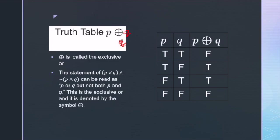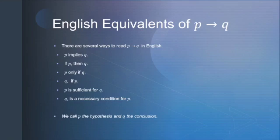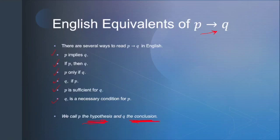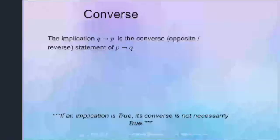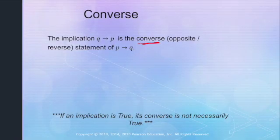Let's look at some equivalents of P implies Q in English — we'll come back to this and make more truth tables. There are several ways to read P → Q: 'P implies Q,' 'if P then Q,' 'P only if Q,' 'Q if P,' 'P is sufficient for Q,' and 'Q is a necessary condition for P.' We call P our hypothesis and Q our conclusion. The implication Q → P is called the converse of P → Q. If an implication is true, its converse is not necessarily true — for example, the converse of 'if X equals negative 6, then X squared equals 36' is 'if X squared equals 36, then X equals negative 6,' which isn't necessarily true because X could be 6.